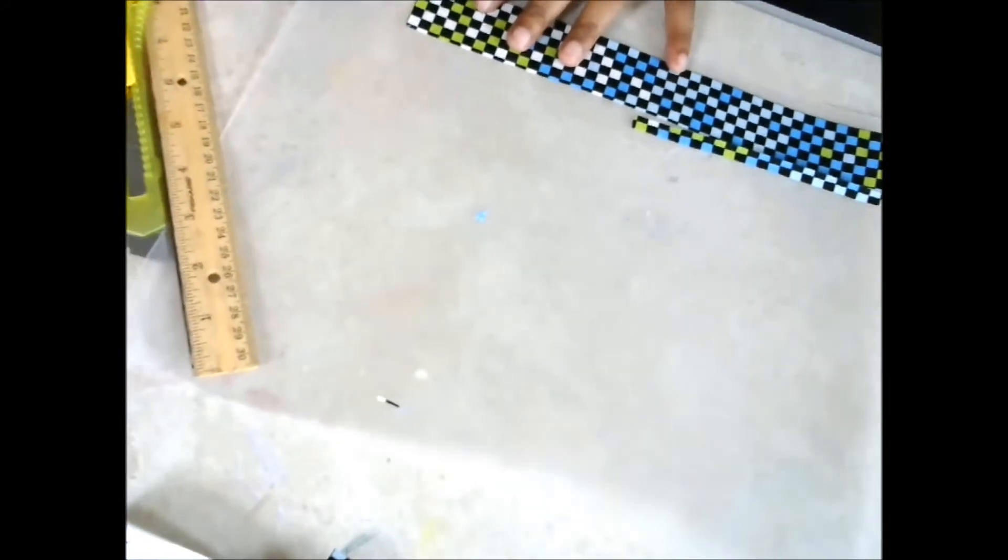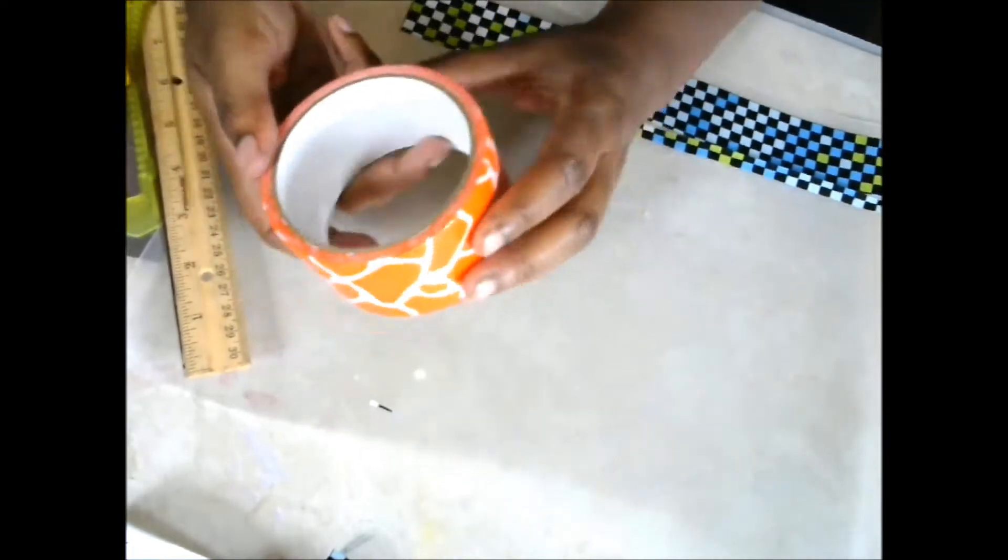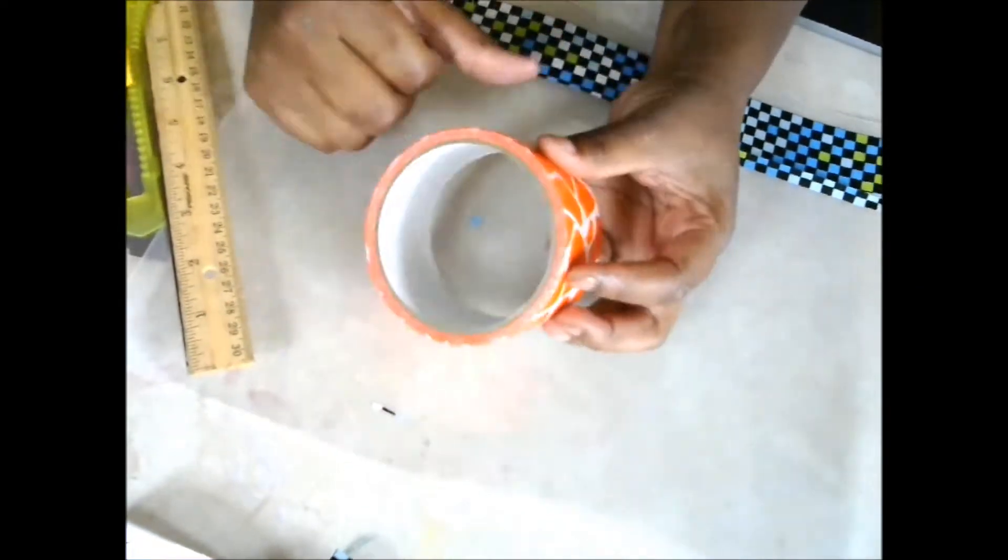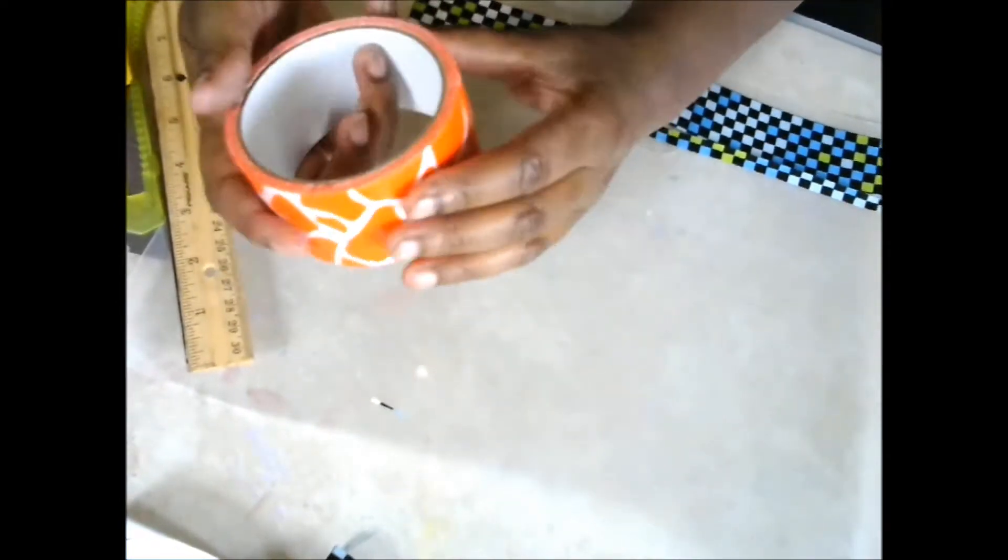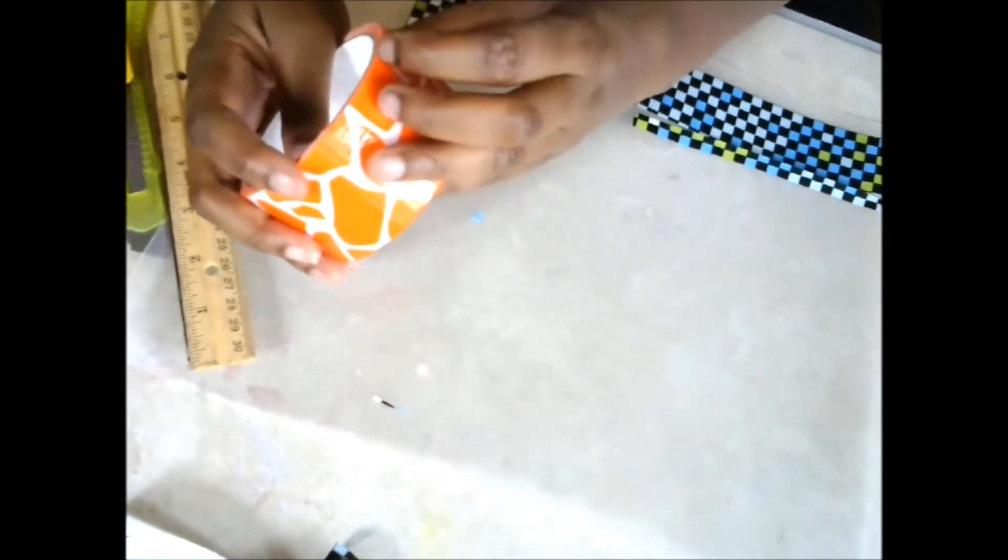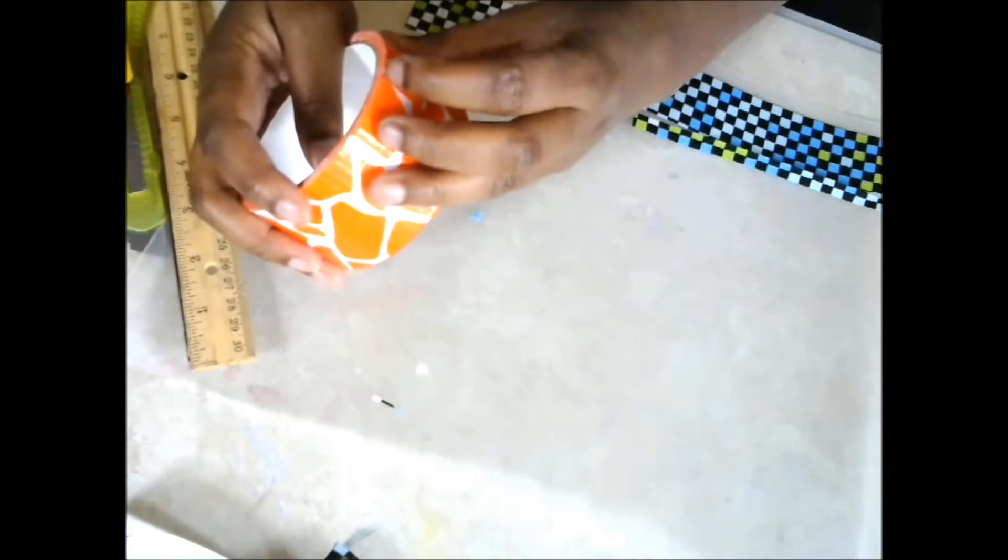All we're going to do is take whatever color duct tape you have. This one I actually got from Big Lots. They were on sale, like 97 cents for a double roll which is really cool.